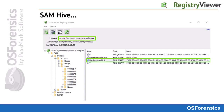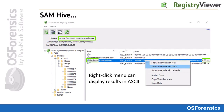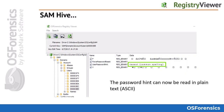Data is presented in the next view as shown here. If you would like to view the data in ASCII, simply right-click and choose the Show Binary Data in ASCII option.